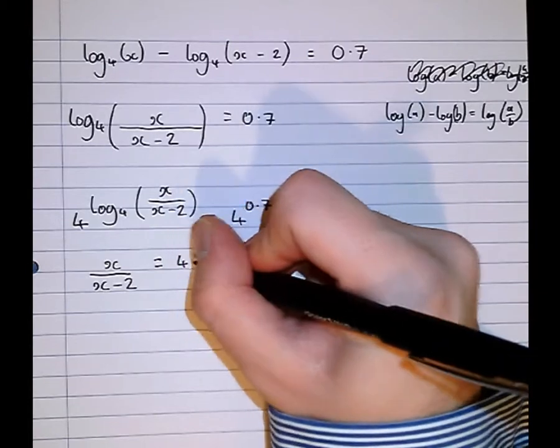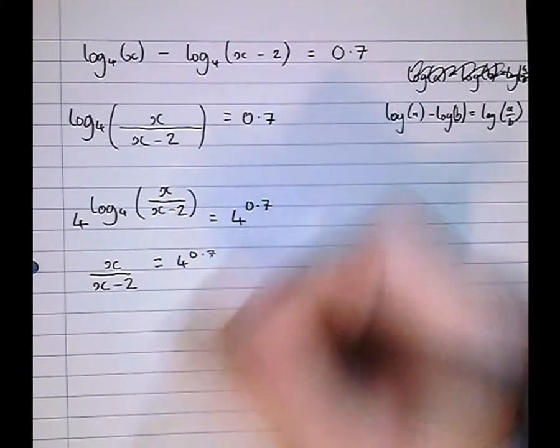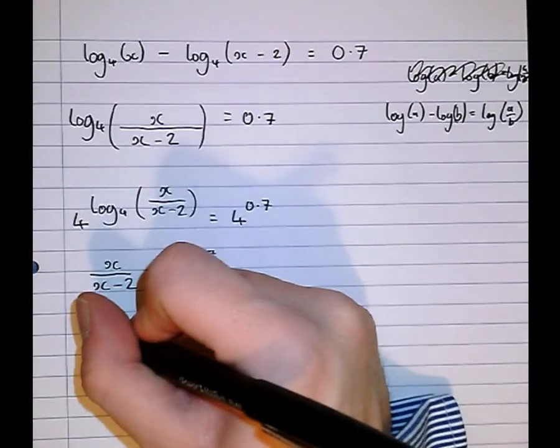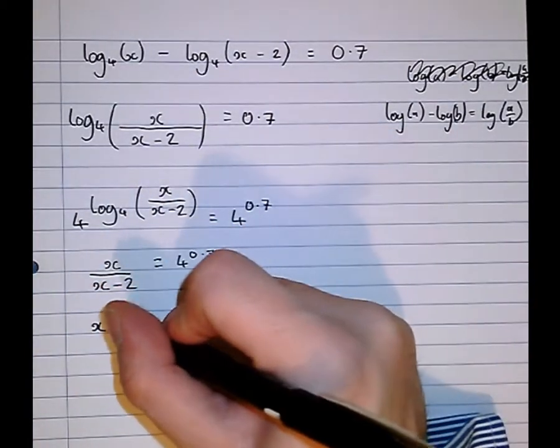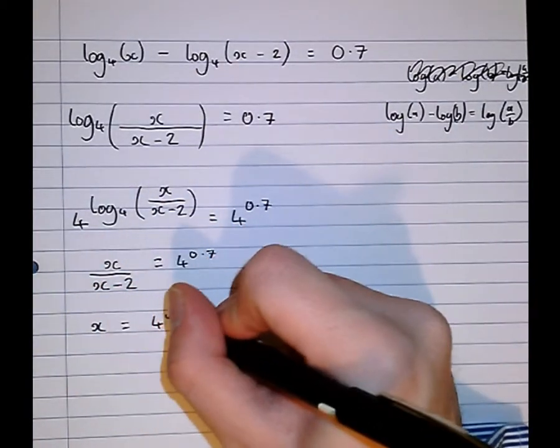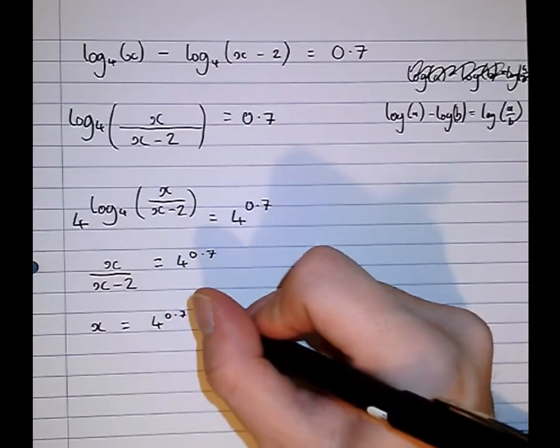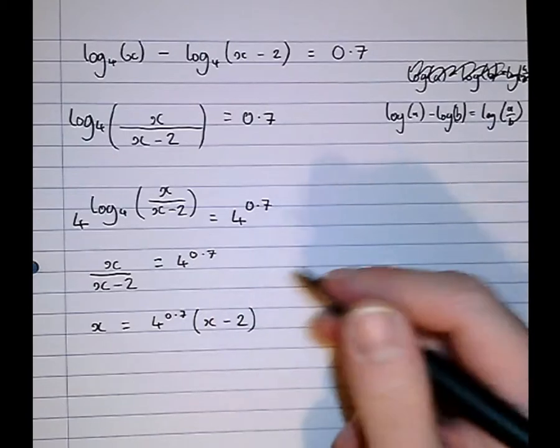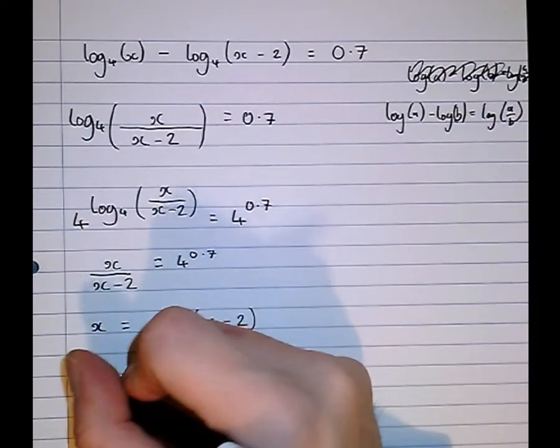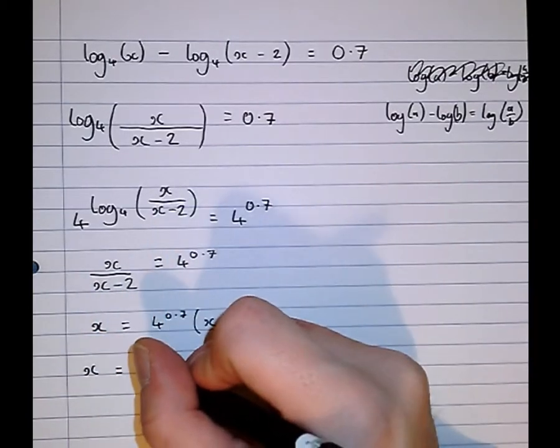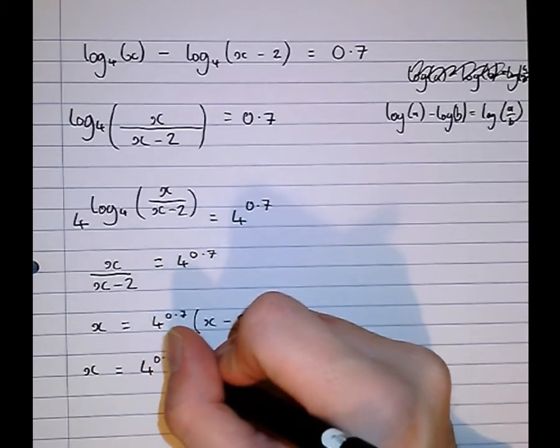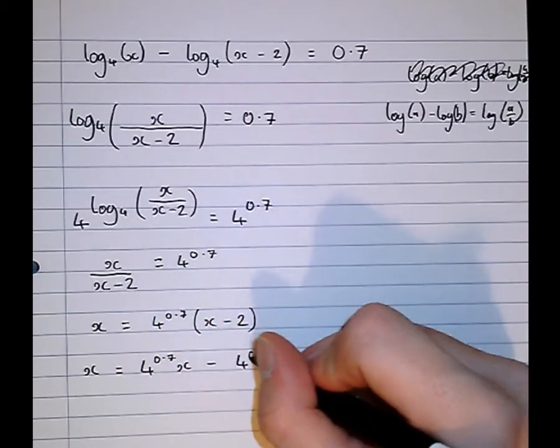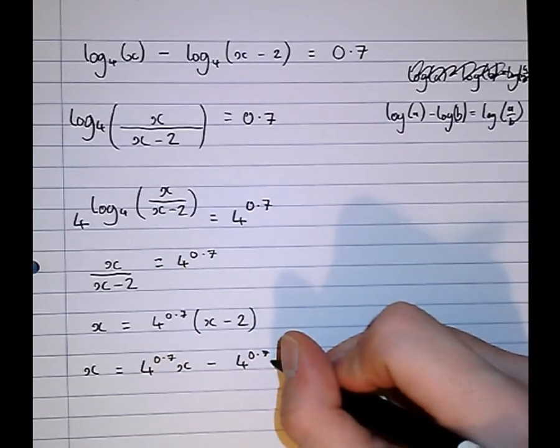4 to the power of 0.7. Then multiplying both sides by x minus 2, I get x equals 4 to the 0.7 times x minus 2. Multiplying out the brackets, x equals 4 to the 0.7 x minus 4 to the 0.7 times 2.